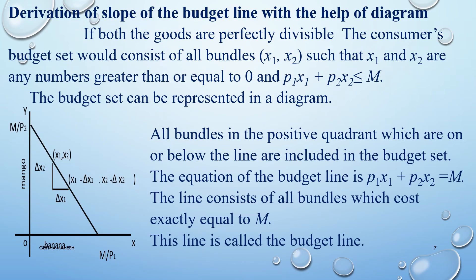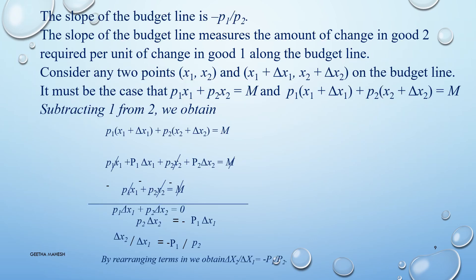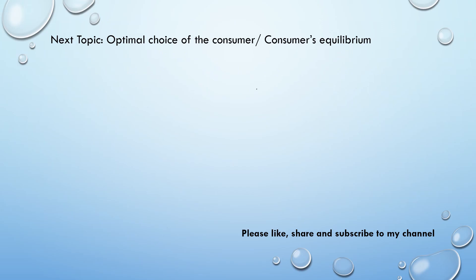Dear students, you have notes on the derivation of the slope of the budget line with the help of a diagram. You can make use of these notes; it is important for four marks. The next topic will be the optimal choice of the consumer, or consumer's equilibrium. If you like this video, please like, share, and subscribe to my channel. Thank you very much.